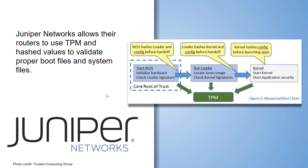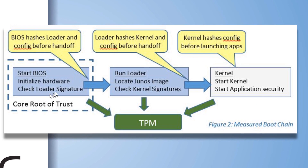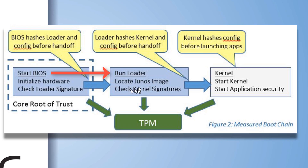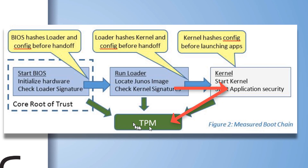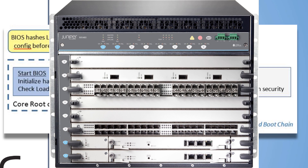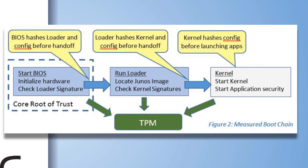Juniper Networks allows their routers to use TPM and hashed values to validate proper booting. The TPM measures the hashed values of a known good BIOS, validates the BIOS, runs the bootloader for the Junos image — again comparing a stored hash value of what should be there — and even when the kernel is run, we can compare it with a known good value. So every time a router boots up, we know the image is correct — all using a TPM.